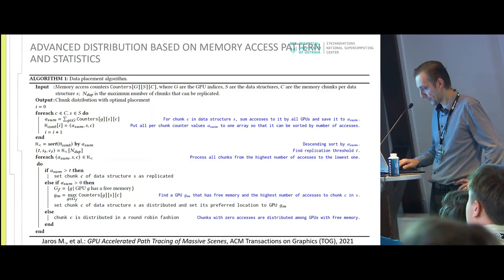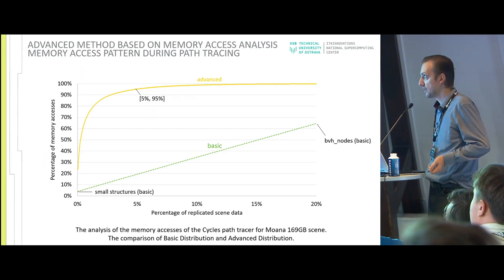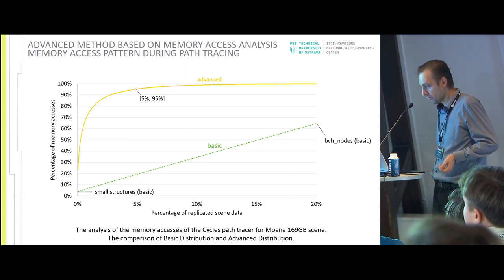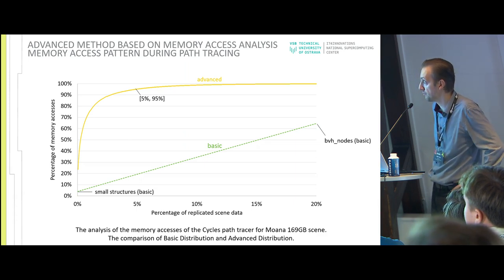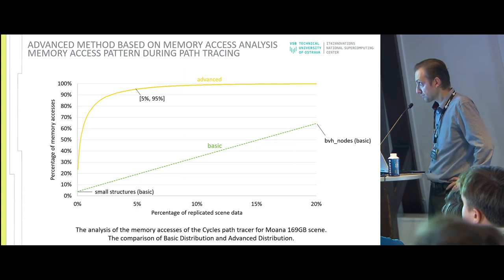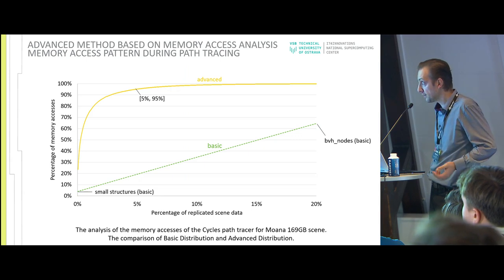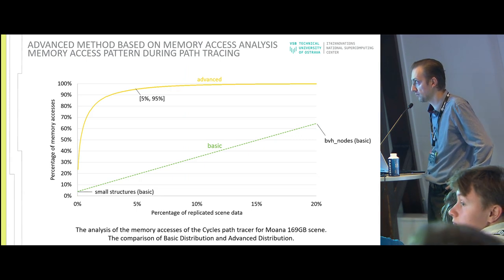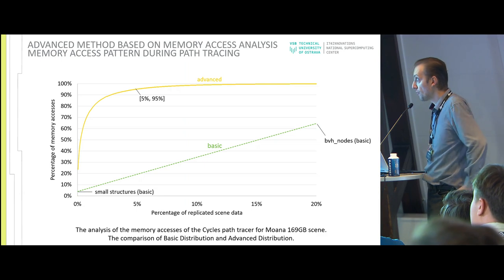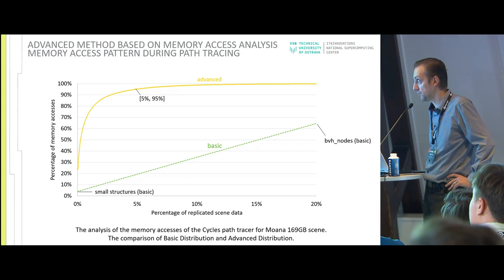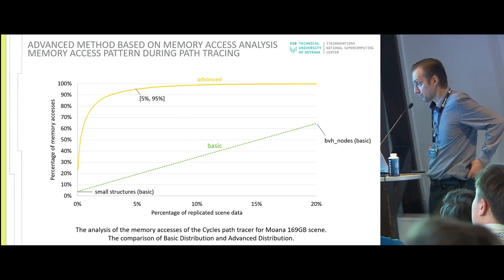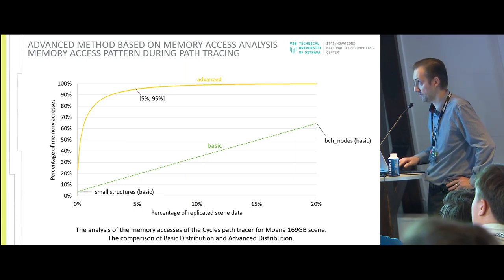What is the difference between the advanced and basic methods? For the Moana scene with a five percent replication ratio: in the basic case, we cover only 20% of all accesses. But if we use the advanced method with the same five percent replication ratio, we cover over 94% of all accesses to the arrays, which results in very good rendering time.